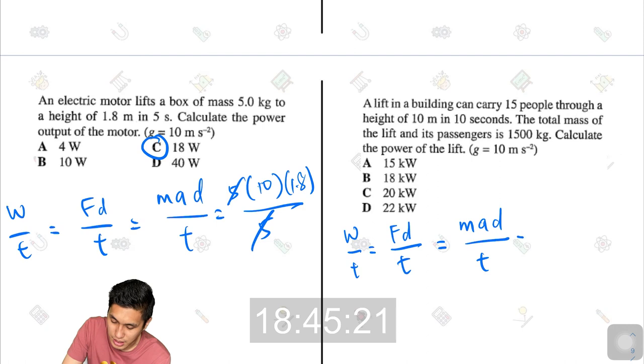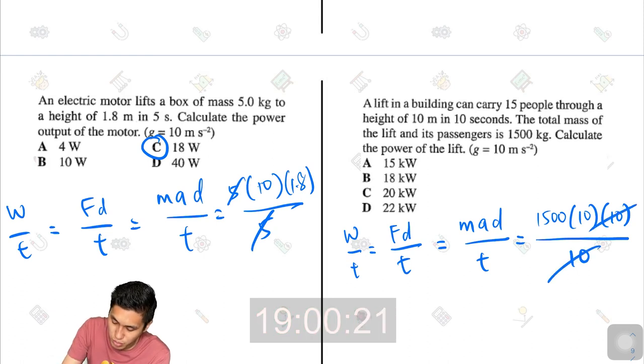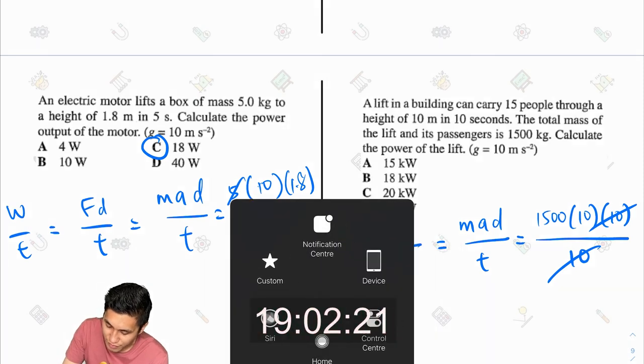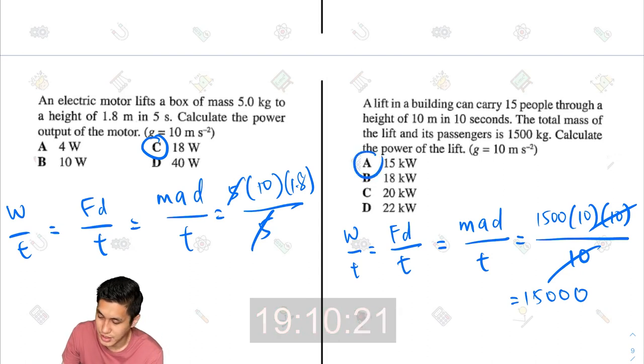Times distance divided by time. I'll get the mass 1,500. Multiply by the acceleration, that's 10. The distance is also 10 meters. And divided by time, 10 seconds. So if I cancel one of this off, I'll get the answer to be 15. Sorry. 1,500. So that's 15 kilowatts. So the answer is A.